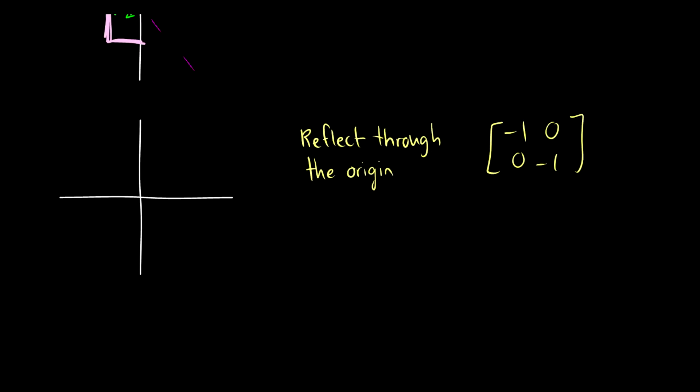Another thing we can do is reflect through the origin. That means we're taking -x1 and -x2. If we have our points, our old box there, we're just reflecting it through the origin. If we have a point here, the point ends up over here. We have a point here, ends up over here. So we end up with this box in the bottom left.